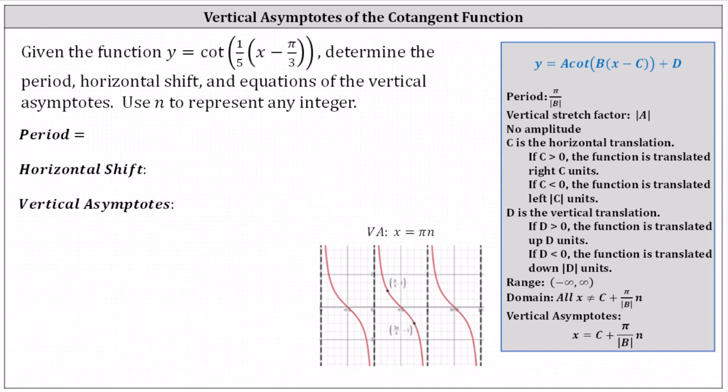Given the function y equals cotangent of the product of one fifth and the quantity x minus pi divided by three, determine the period, horizontal shift, and equations of the vertical asymptotes. Use n to represent any integer.